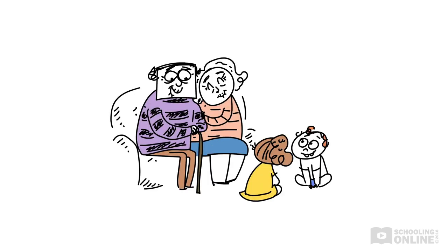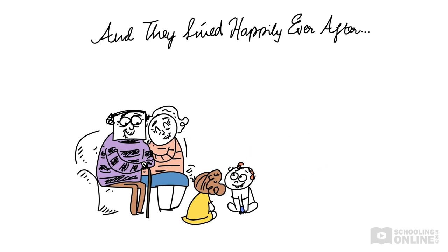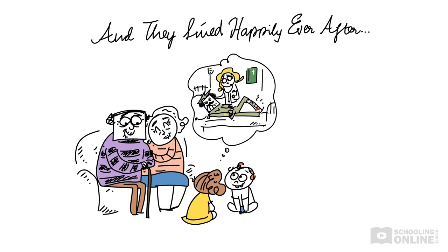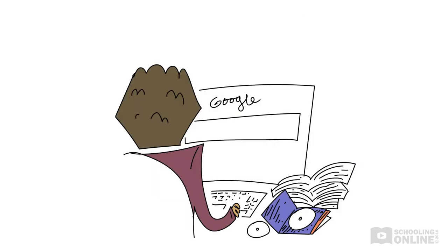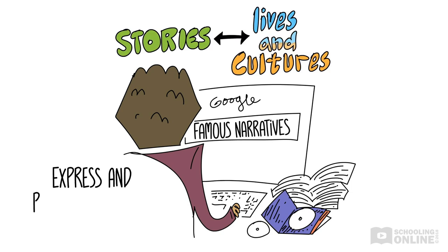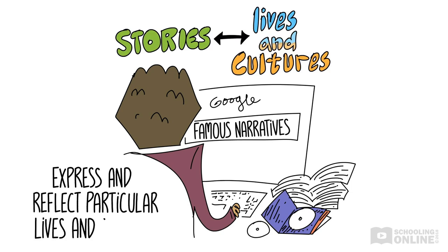Storytelling is the process by which narratives are made, told and shared. All around the world, storytelling is incredibly important because it helps communities convey knowledge, entertain each other and teach moral lessons. Considering the storytelling section of the rubric may be particularly useful when picking related texts. You also need to figure out how the story or stories in your set text express and reflect particular lives and cultures.